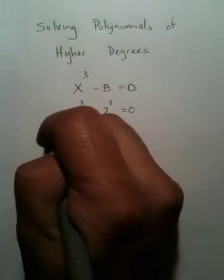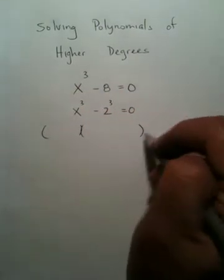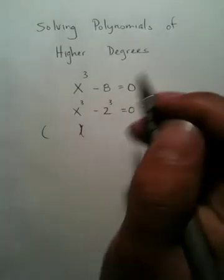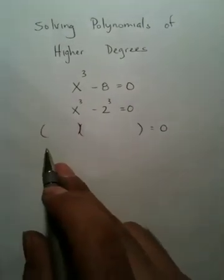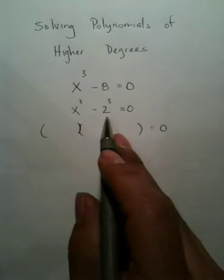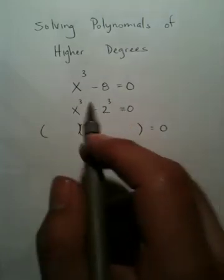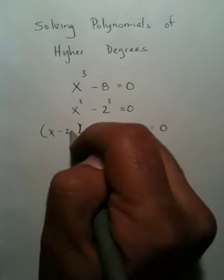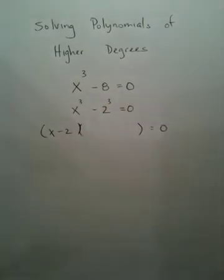When you factor using SADOC, you're going to get a binomial and a trinomial answer. Your binomial answer is going to just be a replication of your original binomial, except with no powers. So you have an x minus 2, you're going to have an x minus 2.